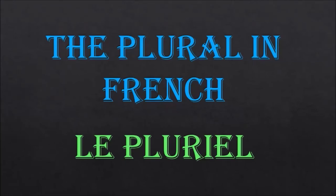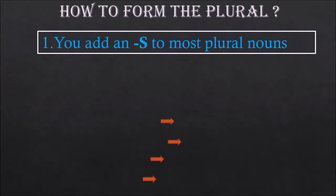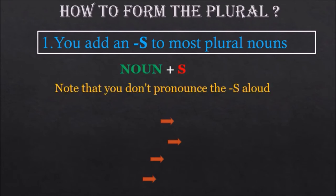Hi everybody, bonjour à tous. Today we are going to see le pluriel. So, how to form the plural in French? You add an S to most plural nouns. Note that you don't pronounce the S aloud.